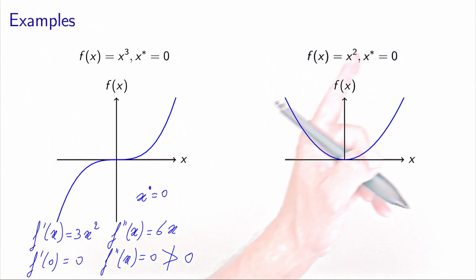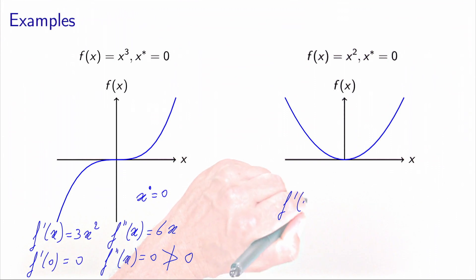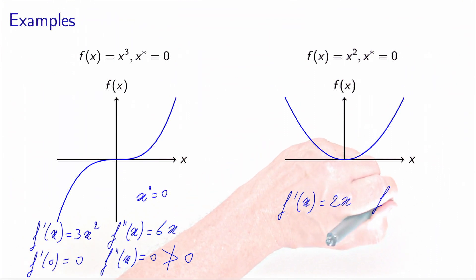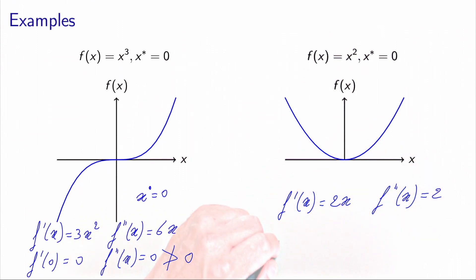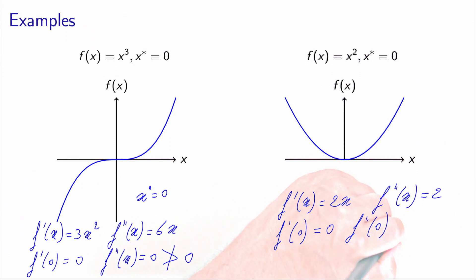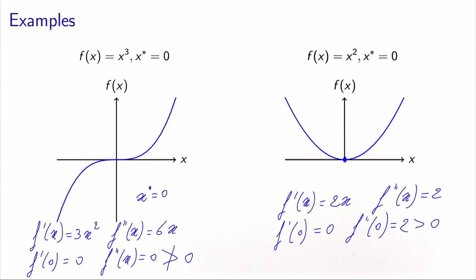For the function f(x) = x², we can easily verify that the sufficient conditions are satisfied. We have f'(x) = 2x and f''(x) = 2. So f'(0) = 0, and f''(0) = 2, which is strictly positive. So the sufficient conditions are verified, and we know that x = 0 is a local minimum.